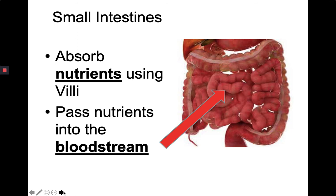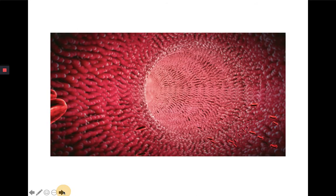the small intestines are filled with little tiny microscopic projections called villi, and as the food passes over the villi, nutrients like carbohydrates, sugars, and fats as well as vitamins are absorbed. Those are passed into the bloodstream, which can then deliver those nutrients to the cells that need it.